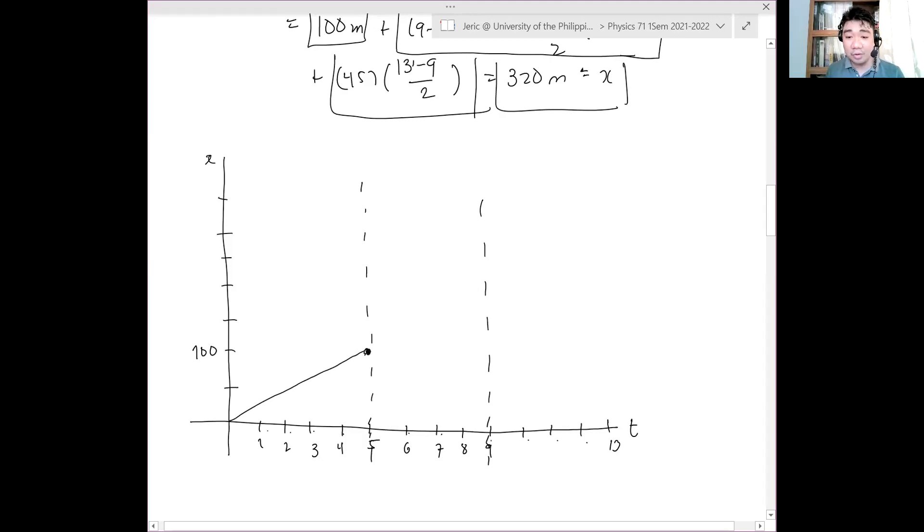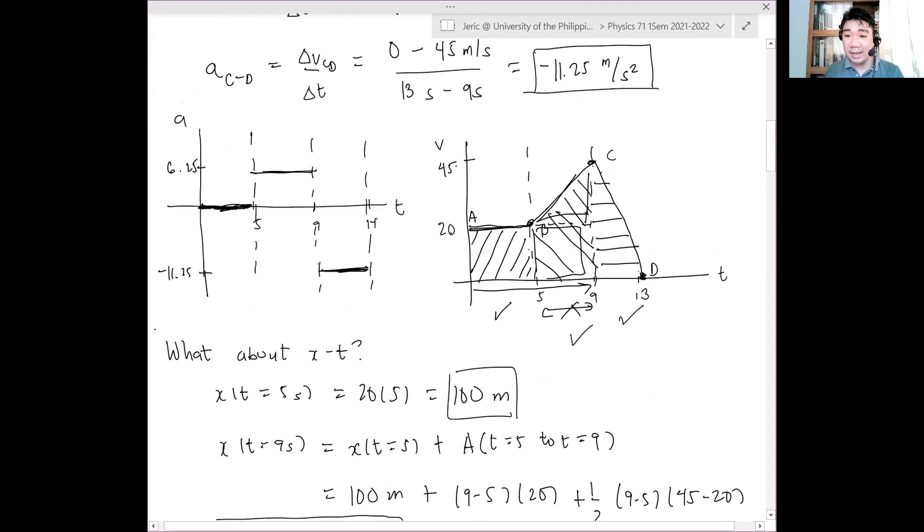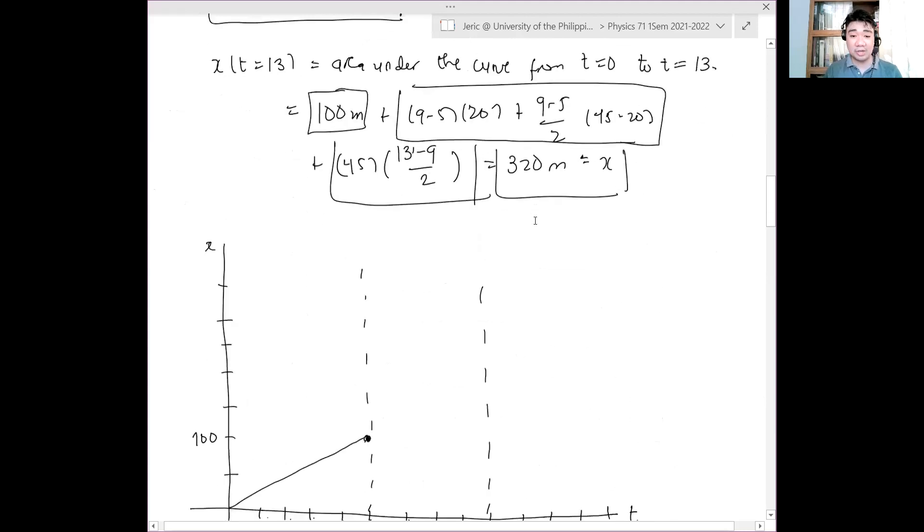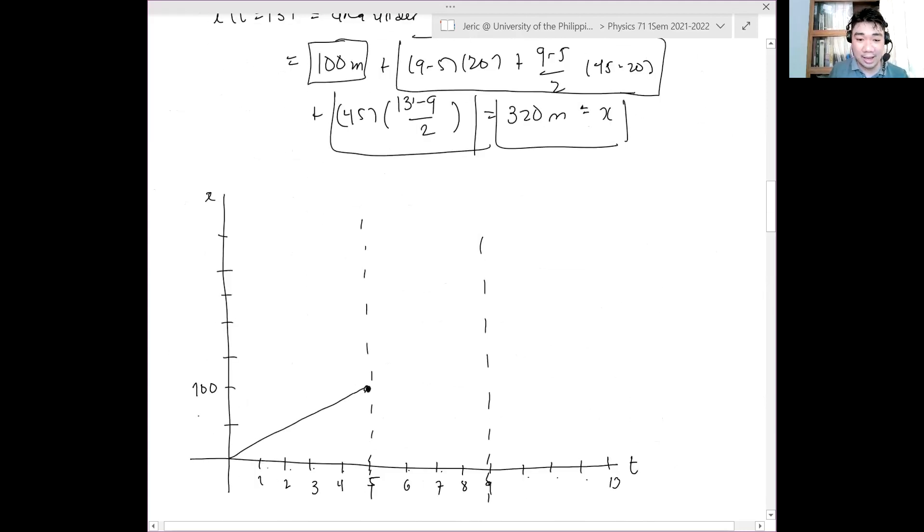From 5 to 9, the line is increasing for the velocity-time graph. Therefore, what can we expect for the position-time graph? Positive velocity and it's increasing. Curved upward, exactly. Now, you know it's curved upward, and it's arriving at 230 meters. That's why the transition points are important, because you know it's going there. This is 230, curving upward. Straight line, curve upward.